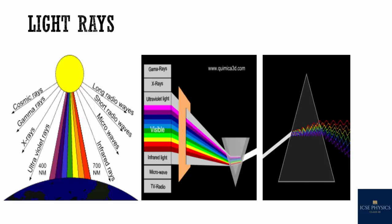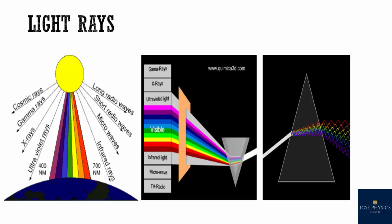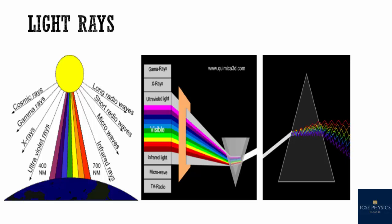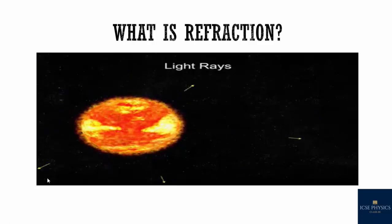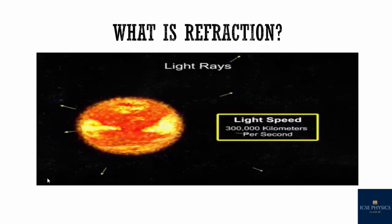Light always travels in a straight line with different speeds in different mediums — it travels faster in air than in water. A medium is said to be optically denser if the light slows down in it, and optically rarer if the light speeds up in it. Water and glass are optically denser than air, and air is an optically rarer medium than water and glass. Light rays travel in a straight line through space at approximately 3 × 10⁸ meters per second.